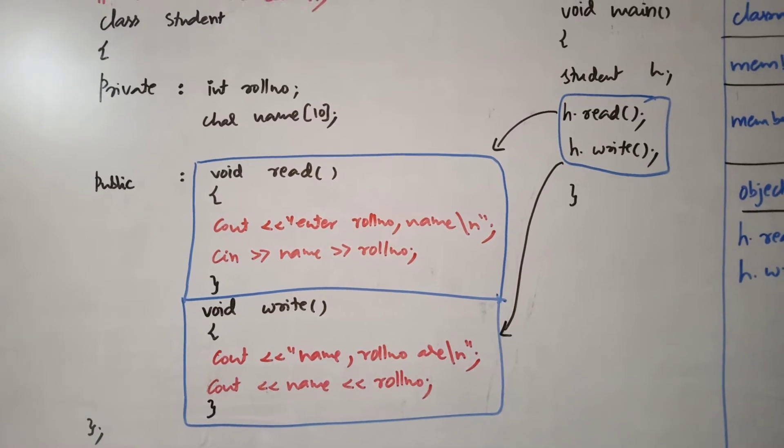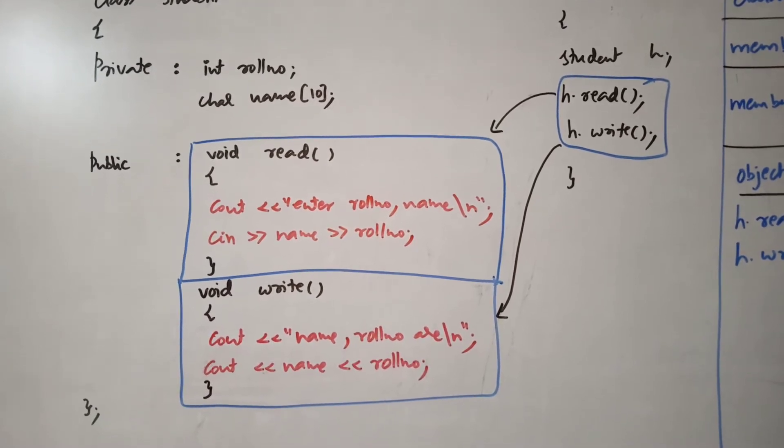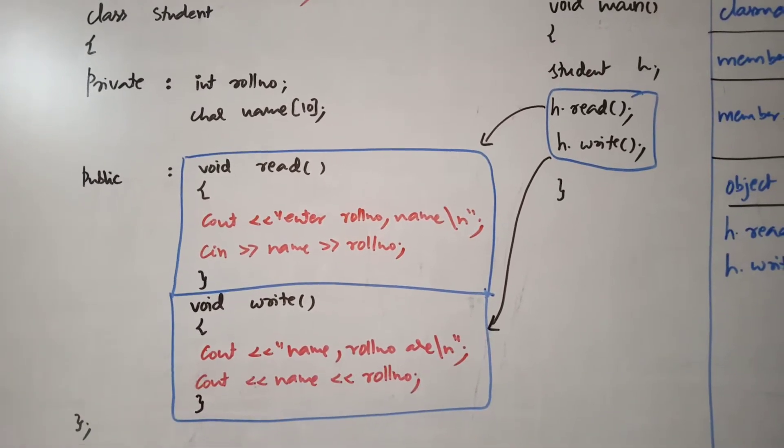So class name is student and we have roll number and name as members private. Anything private cannot be accessible outside the class.